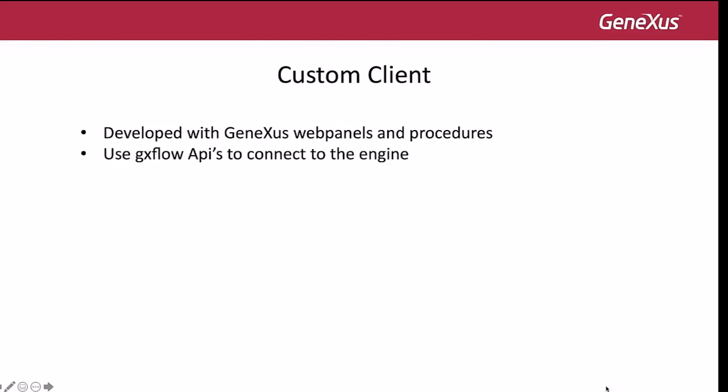If you look at the source code programmed in these web panels, we can see how they use the workflow APIs to connect the workflow engine and get the information needed in each case, and execute different functions for each object. In this video, we are going to see some of the panels from the Custom Client to understand its code and how they can be modified.